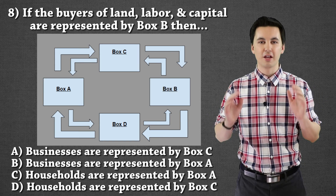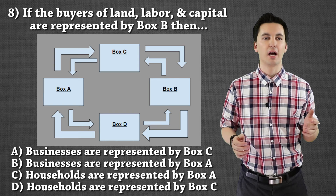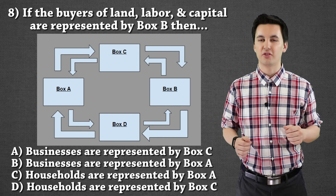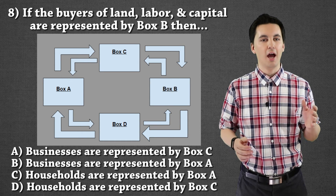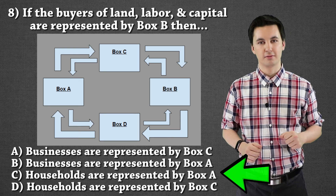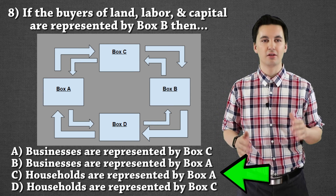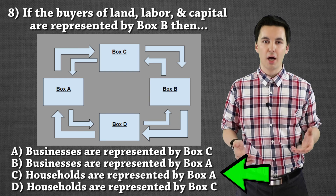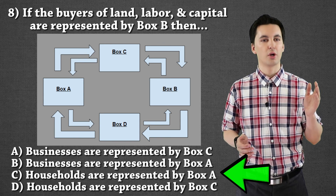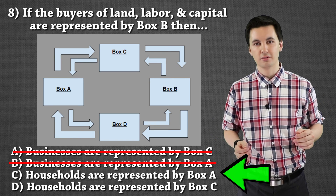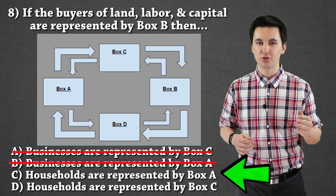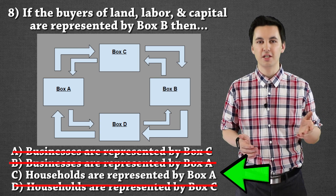Our last question, question number eight: if the buyers of land, labor, and capital are represented by box B of the circular flow diagram, then — A, businesses are represented by box C; B, businesses are represented by box A; C, households are represented by box A; or D, households are represented by box C. If you said C, you are correct. We know from the prompt that buyers of land, labor, and capital are represented by box B. The people who buy all factors of production are businesses, so box B is businesses. This immediately eliminates letter A and B. And thinking back to our tips — if businesses are box B, households have to be on the opposite side, which eliminates D. That leaves us with C.